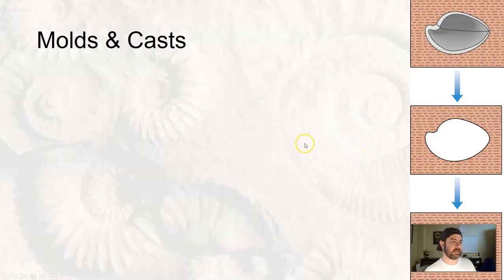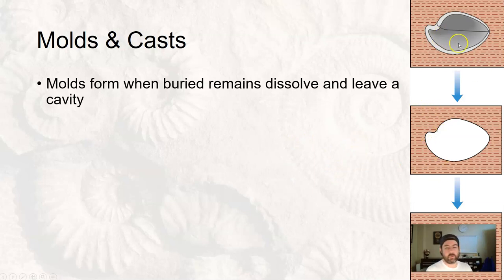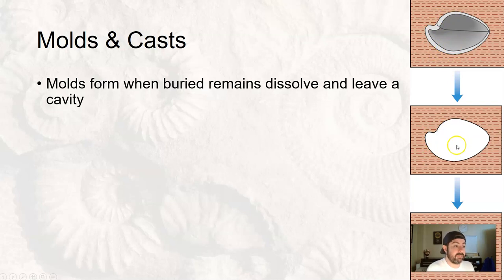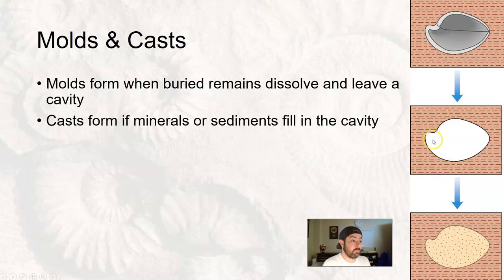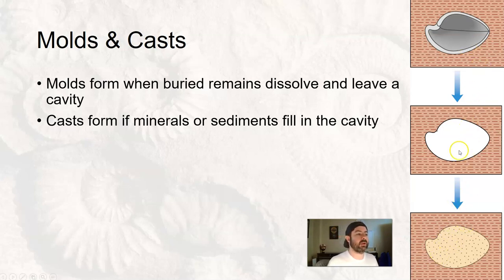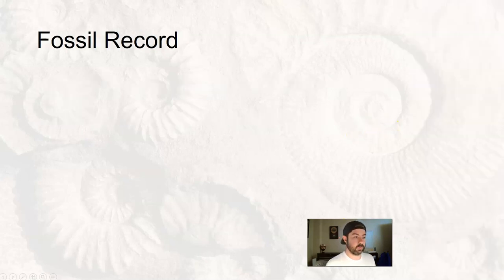And then we get molds and casts. Let's say you get some organic material, like some sort of sea creature or seashell. It dies and it's buried. As it decays away it leaves a cavity — that's the mold that's created. Then if minerals or sediment fill the cavity, that's the cast that's created. So when you find a mold and/or cast, the organic material decayed away, but something filled in that cavity — sediment usually — and it forms the shape of it, but it's not anything from the organism itself.